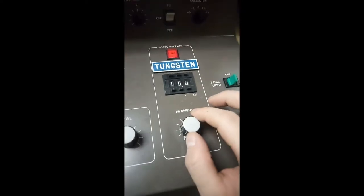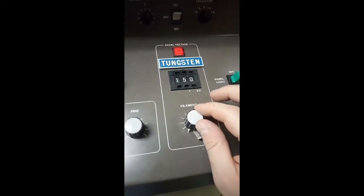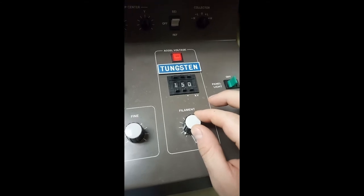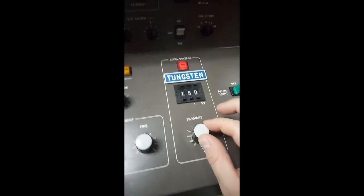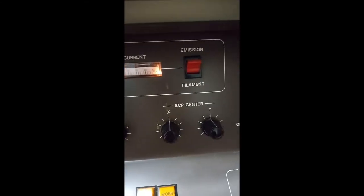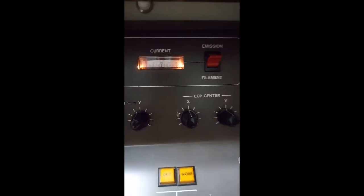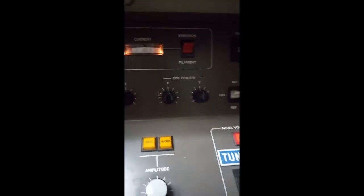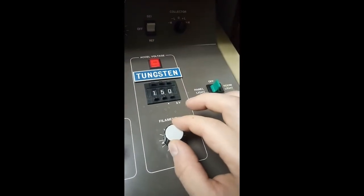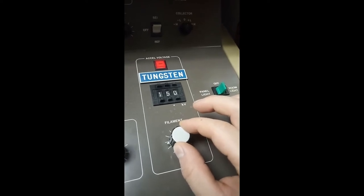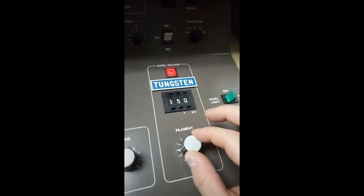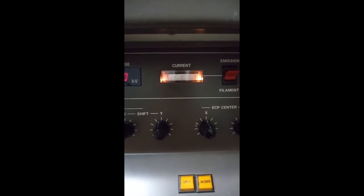When adjusting the filament knob, you want to go very slowly, bringing it up. On the meter, because it is set to emission and not filament, we are not going to see anything happen just yet. Right around 1 o'clock, as soon as we get to about 1 o'clock, we will see the meter start to rise a little bit.